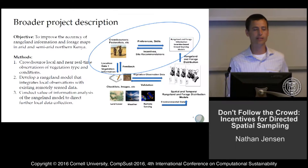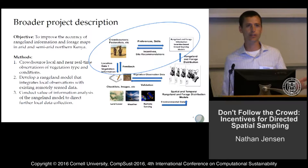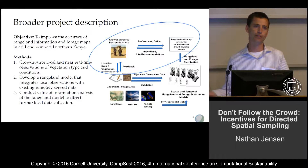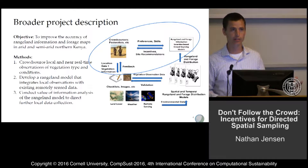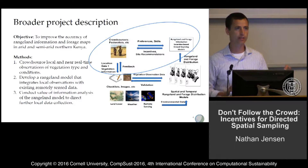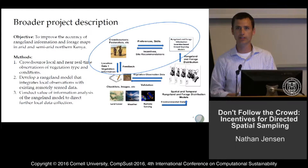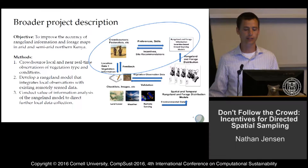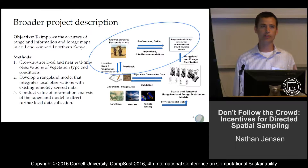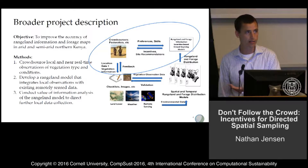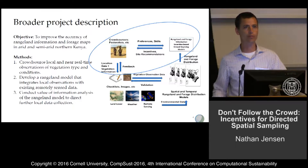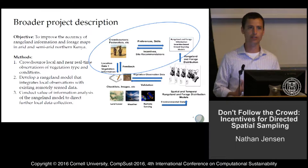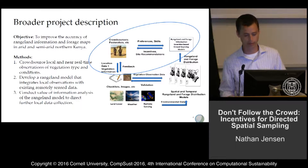Our idea is to take existing remotely sensed data and integrate local information from pastoralists to create a forage model. This model will have some uncertainty associated with it and will evolve over time. We'll iterate — identifying areas where our uncertainty is highest and asking pastoralists to collect more data there. You can think of this as a classification process, but we're also doing it over time, since different vegetation evolves under different conditions at different speeds, so a simple static classification isn't sufficient.